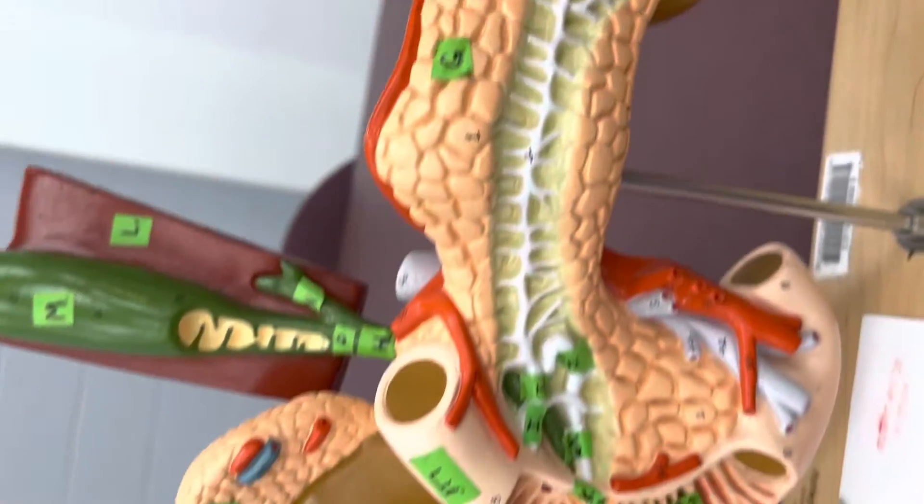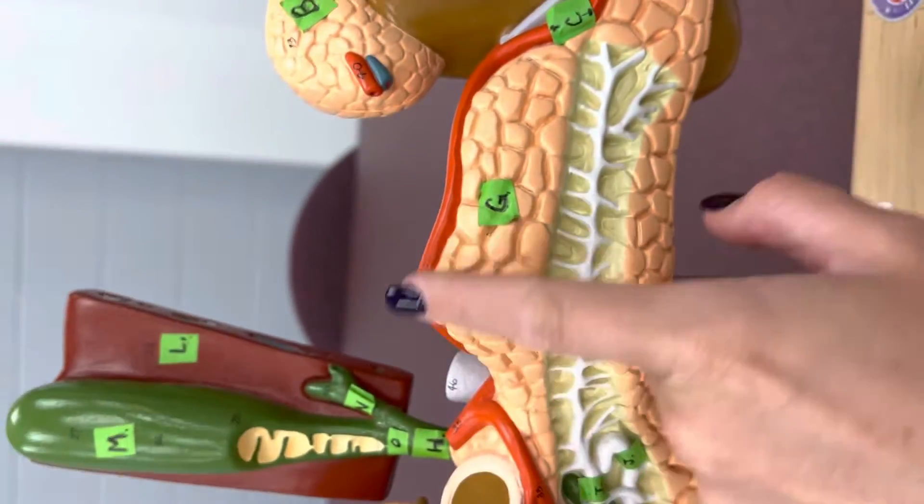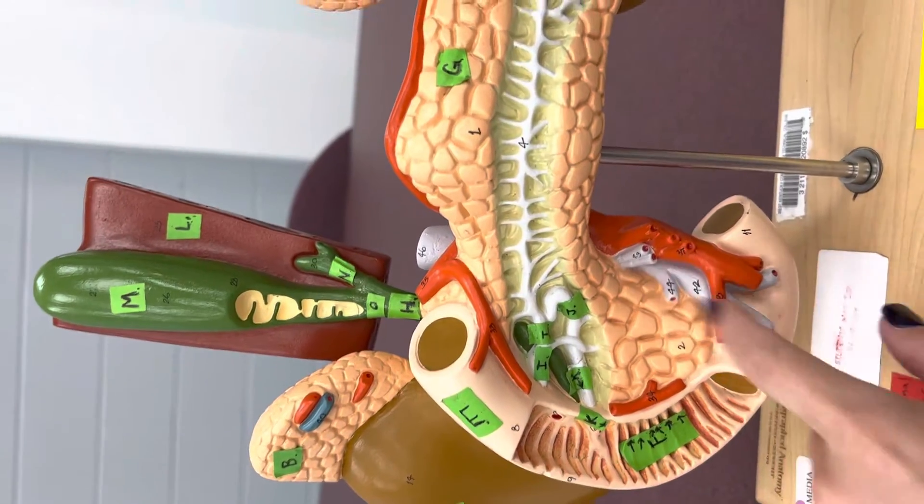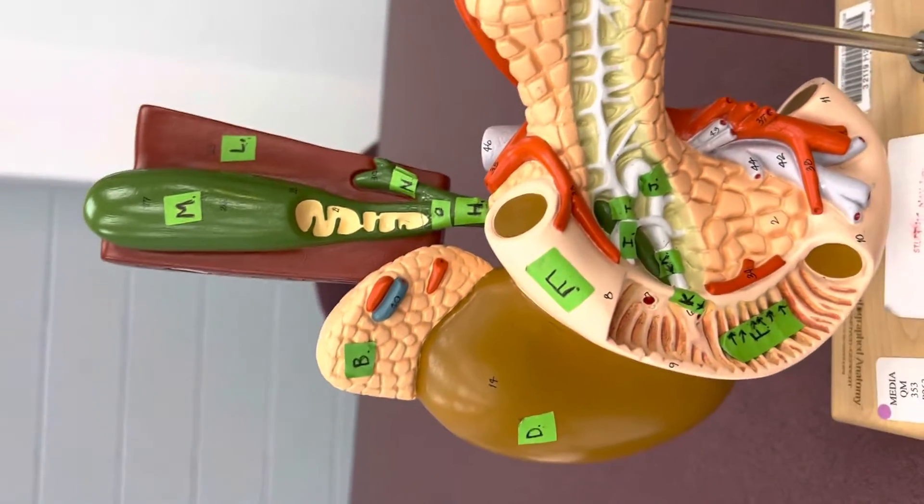G is the pancreas, and that would be this whole region in here. Oh, look. Here's the right kidney, right adrenal gland.